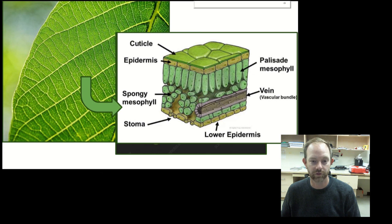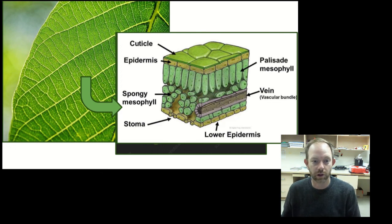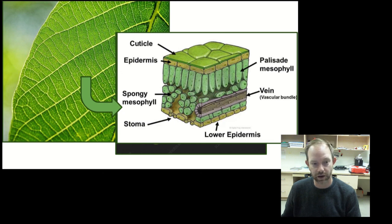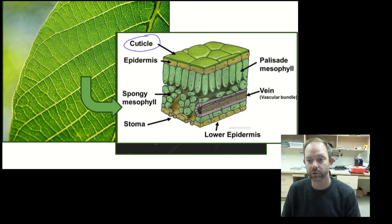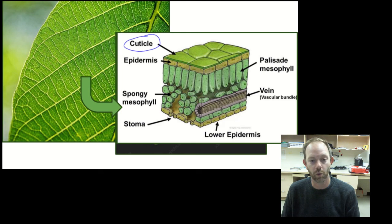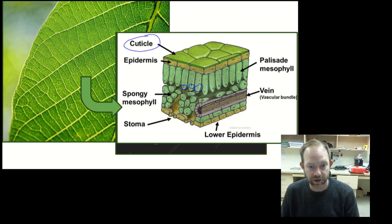Let's take a look at a diagram of a leaf. You can see the same structures: the palisade mesophyll, the spongy mesophyll, a vein, and the epidermis. One thing shown on this diagram that we didn't see in the SEM image is the cuticle — a waxy layer that sits on top of the upper epidermis.